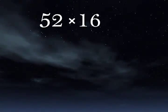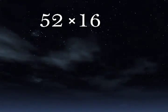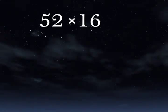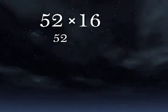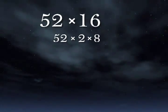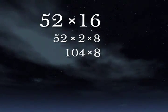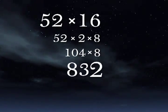Answer this question in under 5 seconds using refactoring. A good approach would be to refactor the 16. So 52 times 2 times 8. 52 times 2 is 104. 104 times 8 is 832.